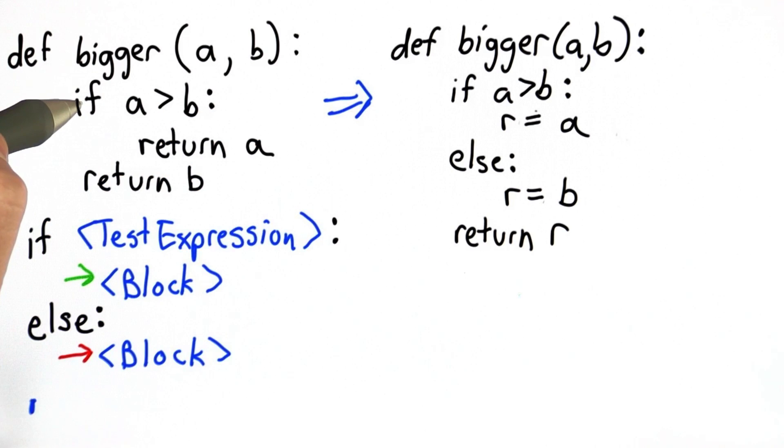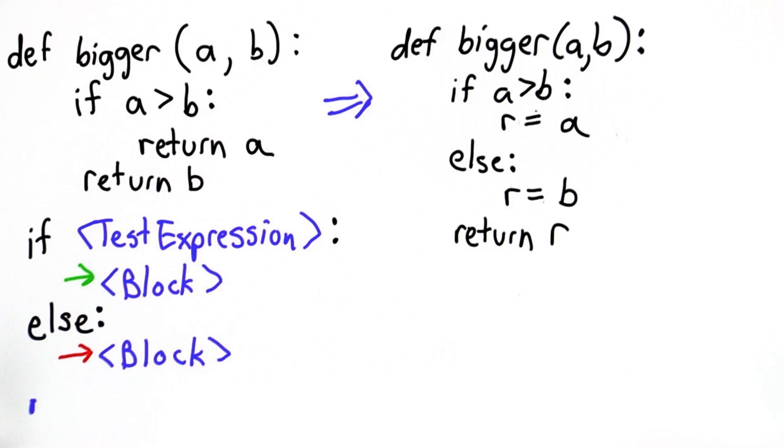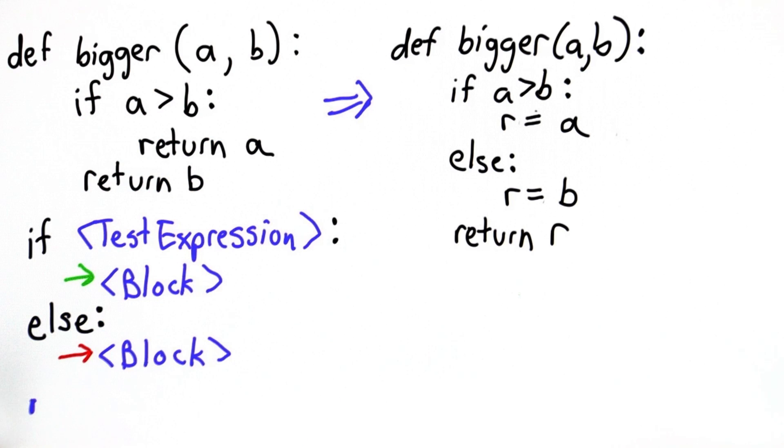Usually we like our programs to be shorter rather than bigger. In this case, when we're defining bigger, maybe the bigger version's better because that's a little easier to understand and follow.